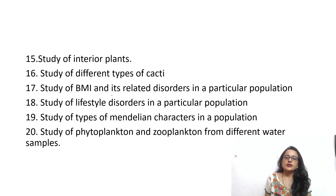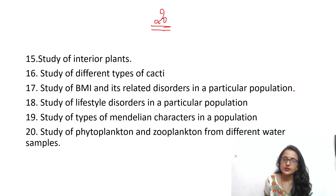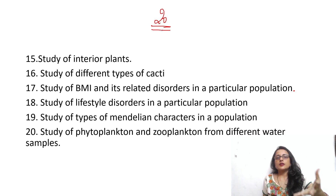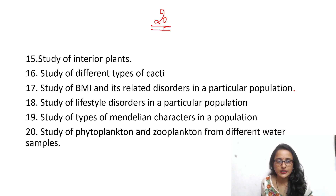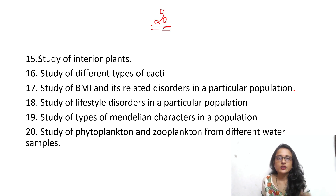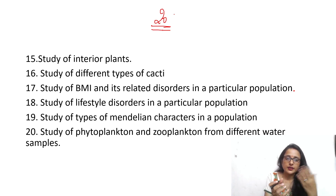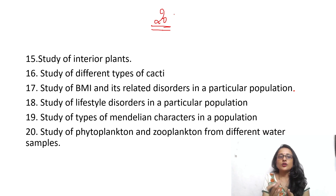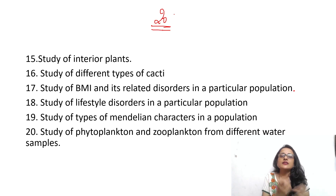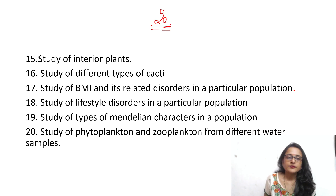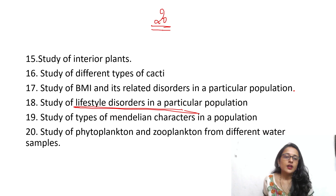Study of BMI and its related disorders in a particular population is a survey-type project. Visit around 20 homes, measure the height and weight of residents, calculate their BMI, and ask questions about age and any disorders like diabetes, hypertension, or heart disease. Then find relationships between BMI and the disorders people are suffering from to determine the most common health issues in that area.